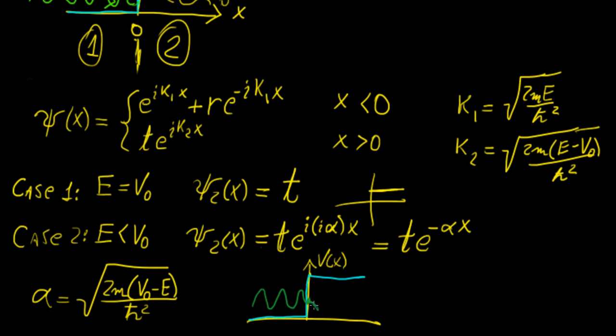Suppose that the energy of the particle is less than that, so it would be oscillating like this. Once it gets to this point, what's going to happen is it is actually just going to decay. It's going to decay like this, and it is going to go to zero.